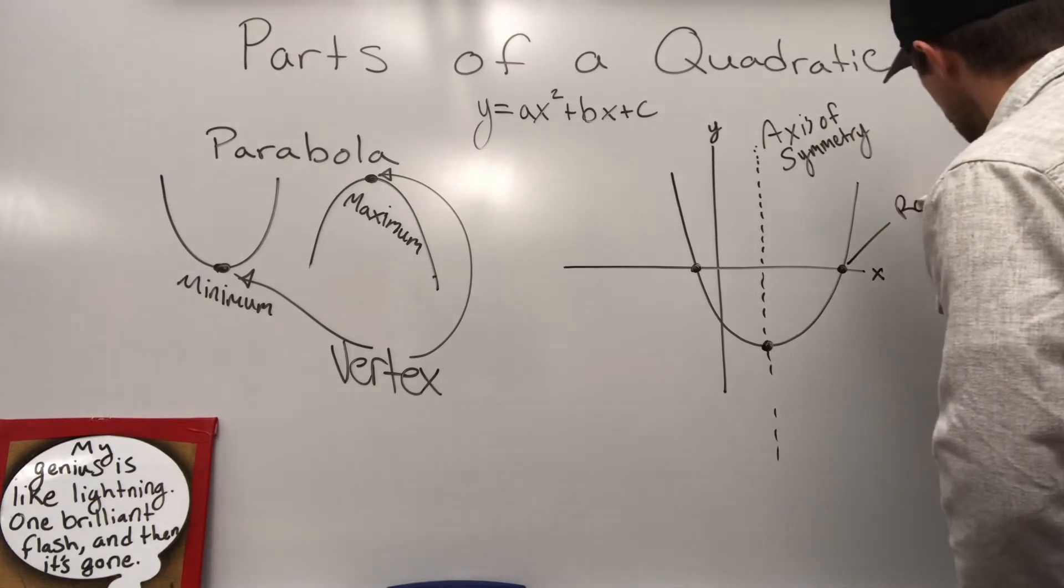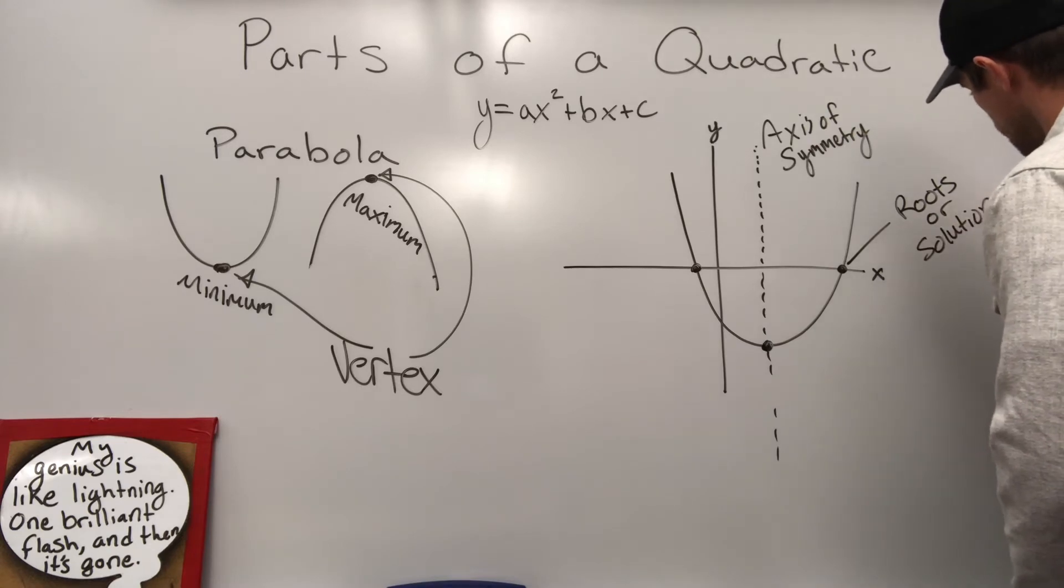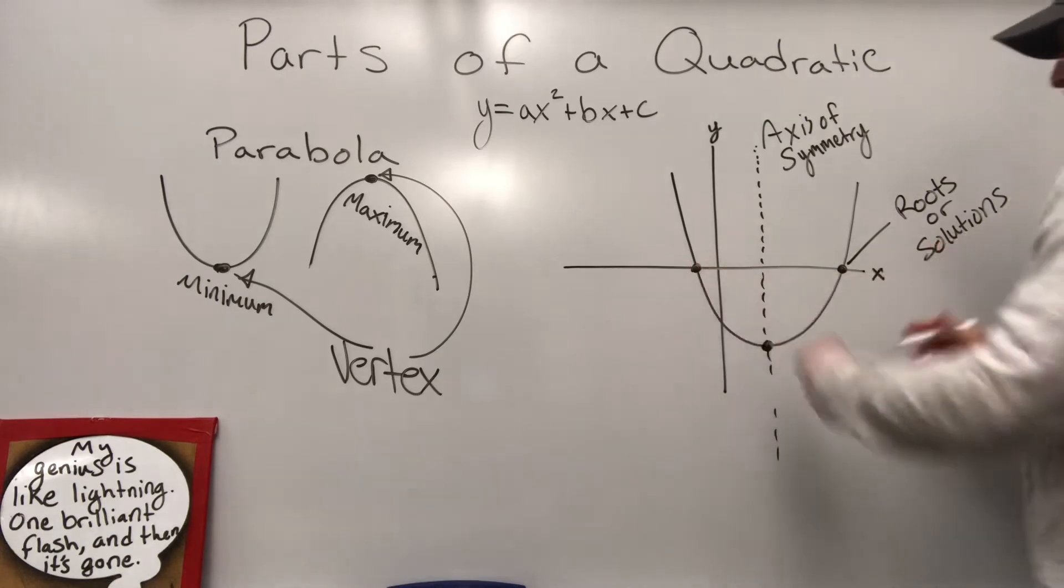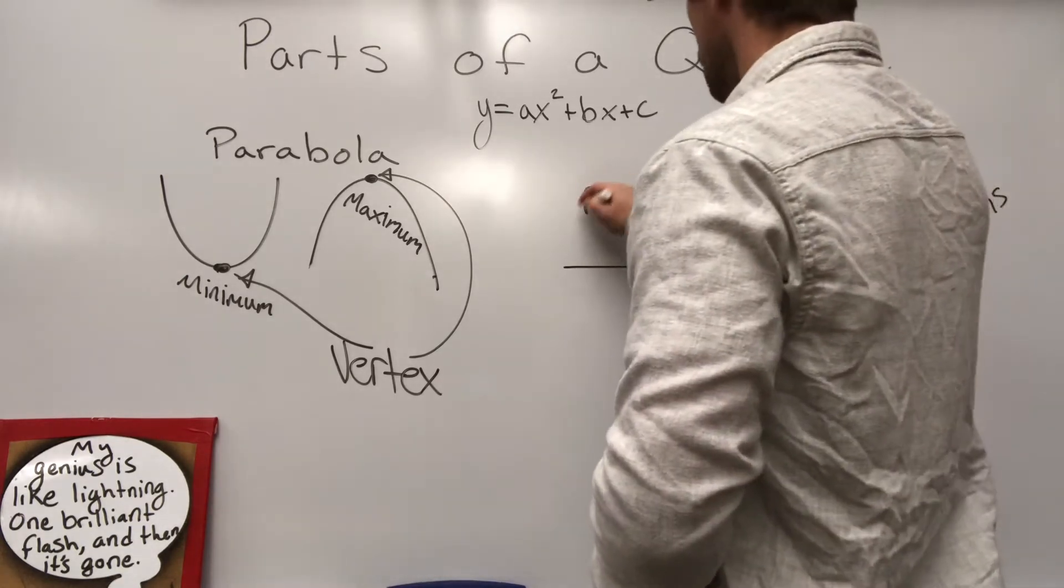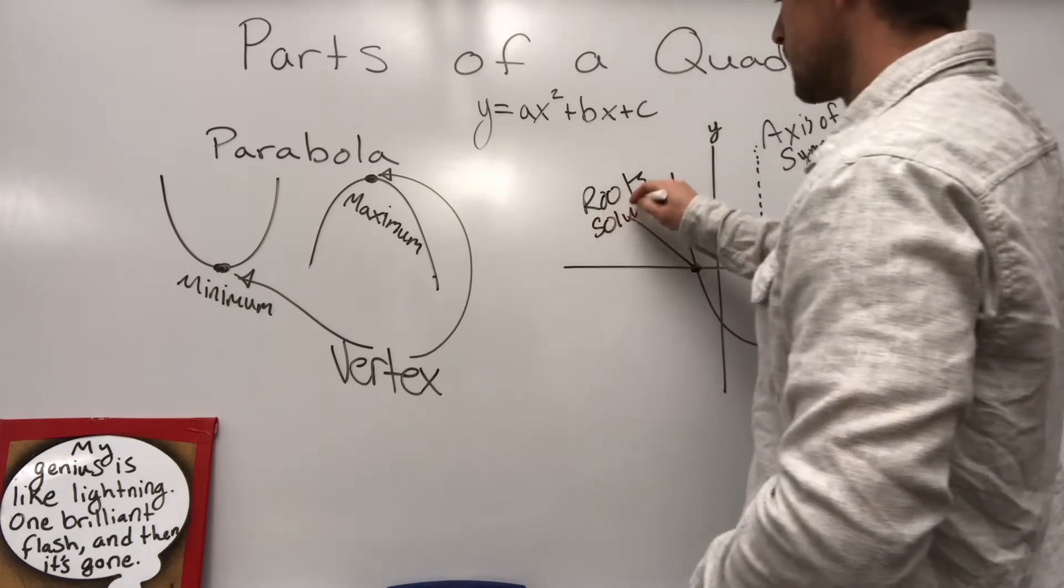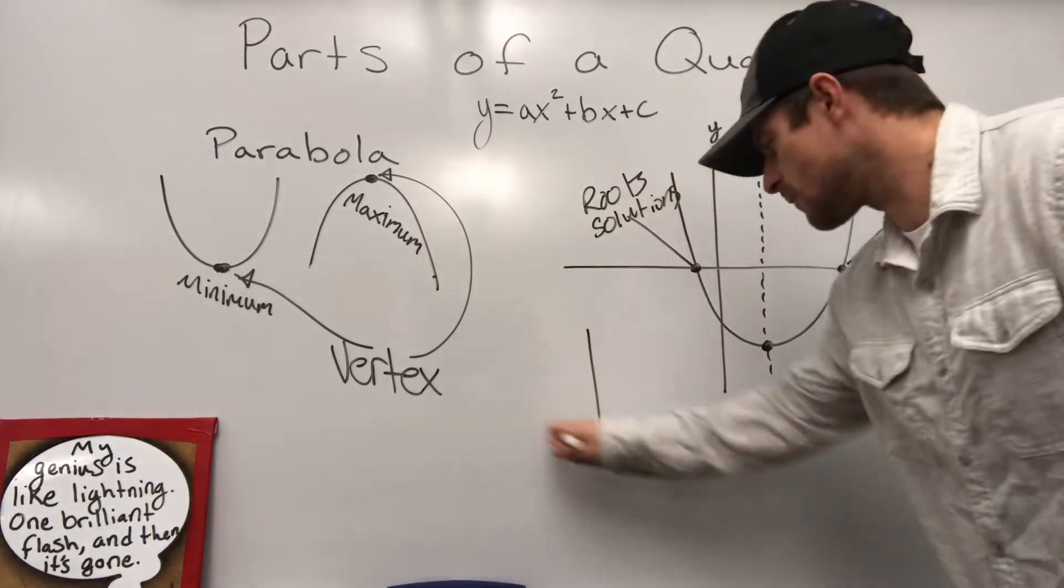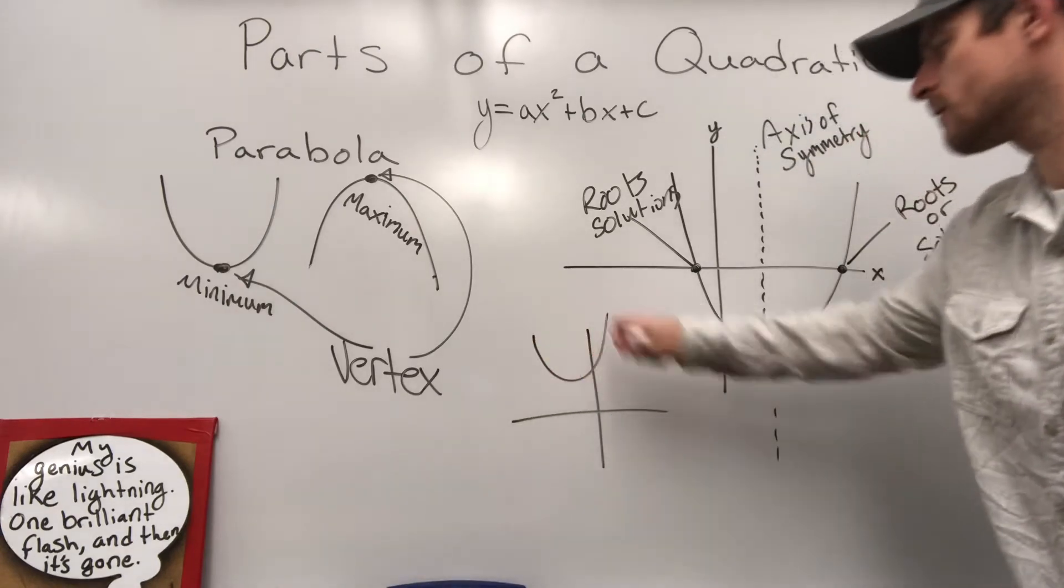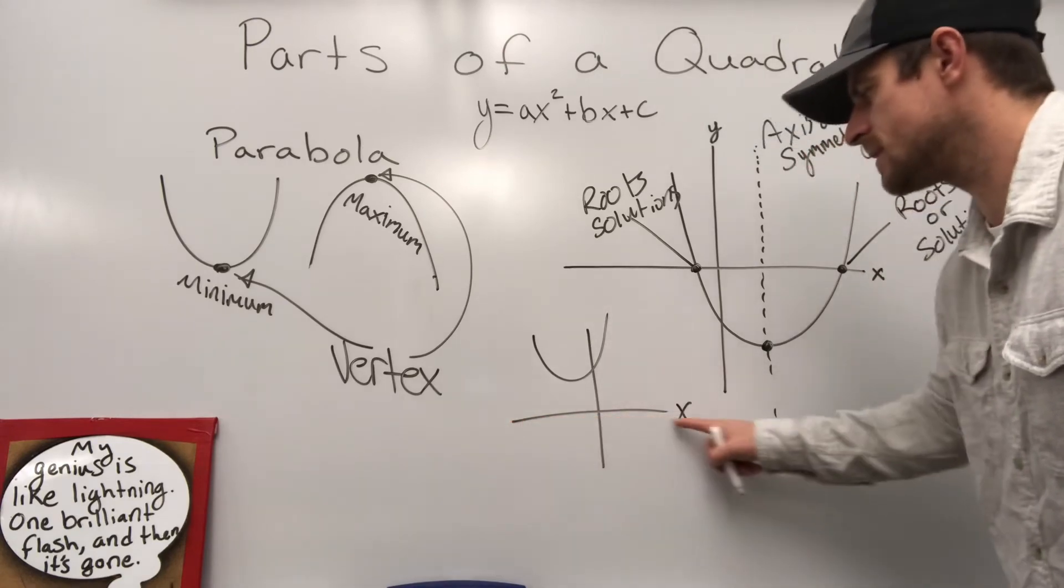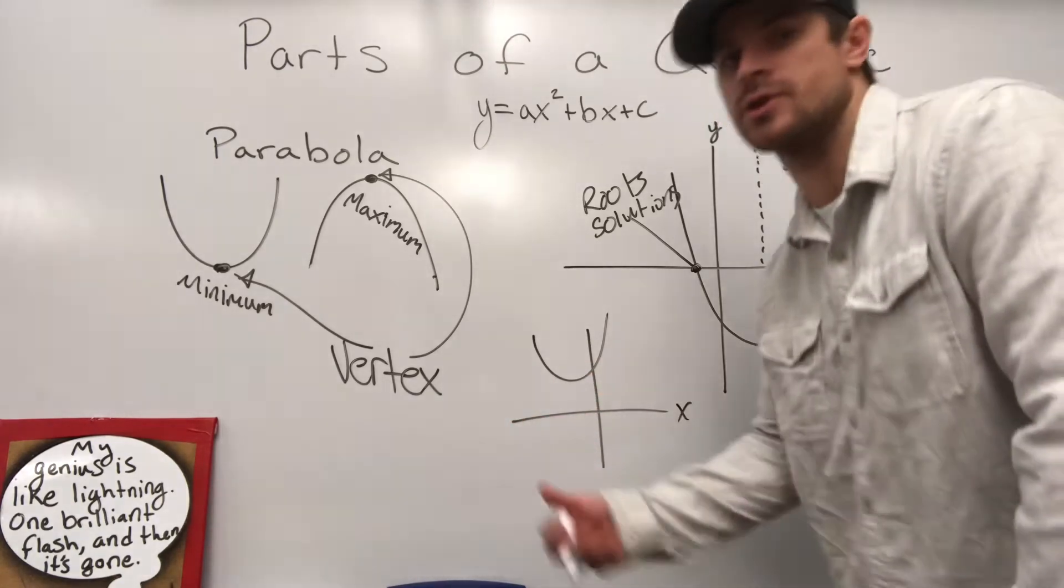Roots or solutions for the quadratic. So in this case, we have two roots or two solutions. Could I have a graph with a parabola right up there that never hits the x-axis? We never hit the x-axis, so we have no solutions or no roots to this quadratic.